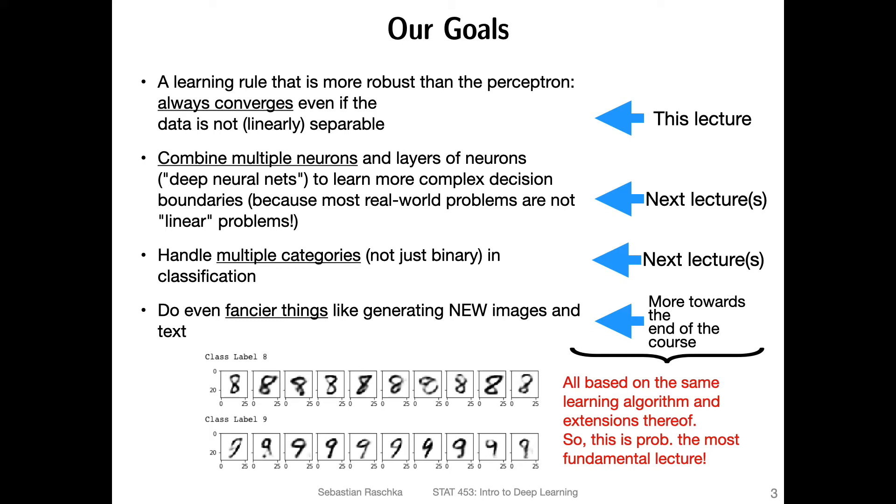Here's an overview of the big picture goals. So in this lecture, we are focusing on a learning rule that is more robust than the perceptron, such that it always converges, even if the data is not linearly separable.